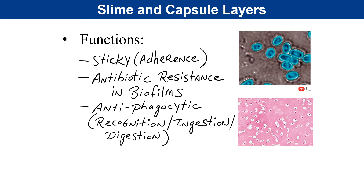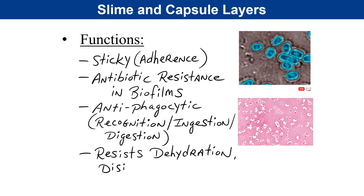Environmentally, the presence of such structures will also allow bacteria to resist dehydration — they won't dry out as easily and are longer-lived in the external environment. They may also resist disinfection. In a medical setting, chemicals applied to destroy bacteria on contact — disinfectants — may be reduced or defeated in eliminating the bacteria. The same would be said for antiseptics, which are chemicals safe for human tissue contact. Antiseptics may have reduced effectiveness when tackling bacteria under such protective layers.